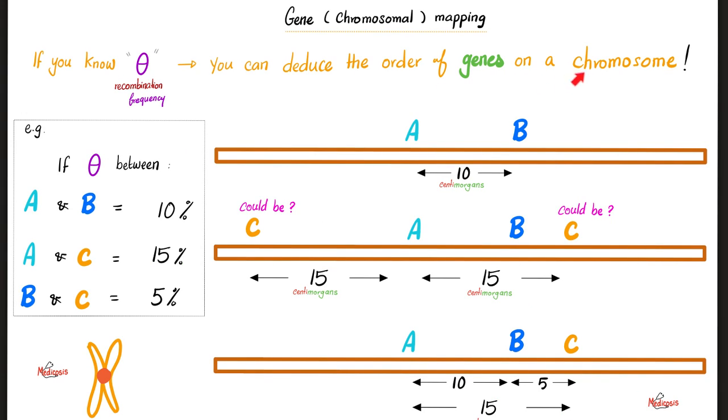What the flip does that mean? Let me explain. Suppose that I told you the following. Here is theta, here is your recombination frequency. Between A and B, the theta is ten percent, i.e. ten centimorgans. Between A and C, it's fifteen percent. Between B and C, it's five percent. What is A, B, and C? Different genes on the same chromosome.